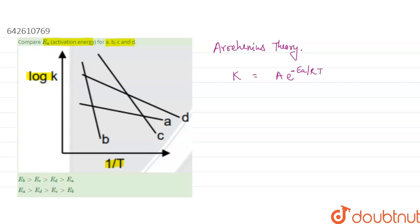Now we take the log both sides. We can get log K equals log A minus Ea upon 2.303RT.